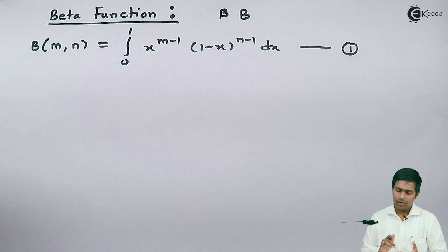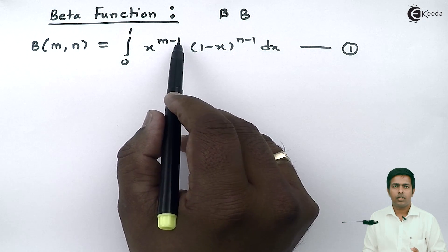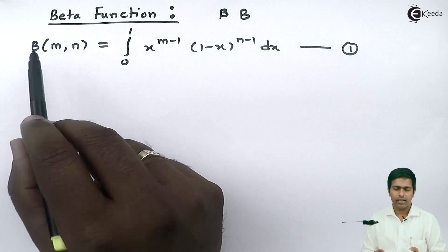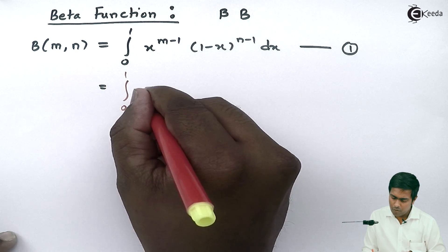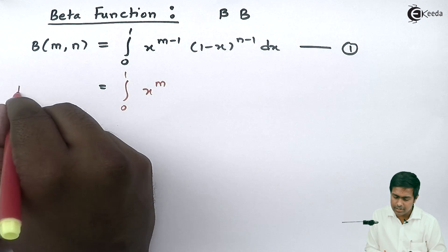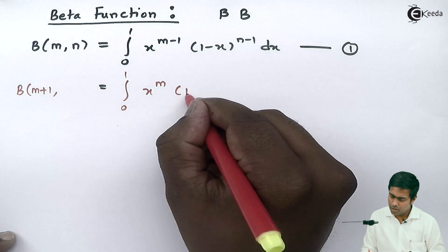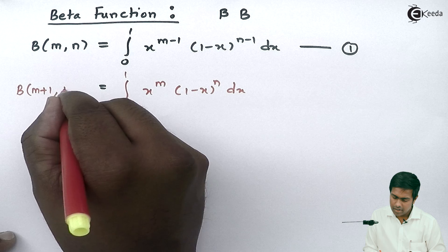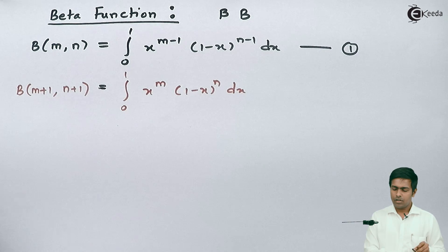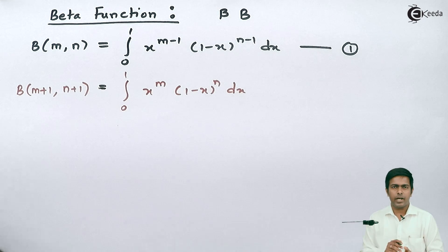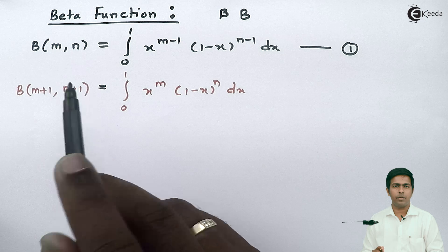If we observe here, when we have the value m, inside the integration we get the power as m minus 1 — that is, the power is always 1 less than m. So if the power of x is m, then inside beta we get m plus 1, and if the power is n we get n plus 1. This alternate form appears in many problems where we substitute it as beta of m plus 1 and n plus 1.